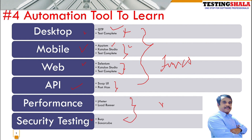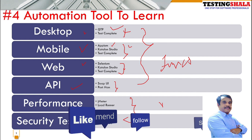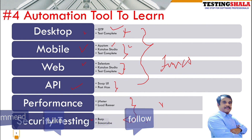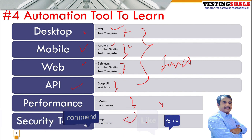These four areas — desktop, mobile, web, and API — fall more within functional testing scope. If you are looking for non-functional automation, you should look for performance automation tools where JMeter and LoadRunner can be used. For security testing, you can use Burp Suite and SonarQube as automation tools. You have to decide which area you will be working upon and pick up the appropriate automation tool accordingly.